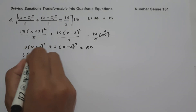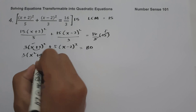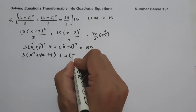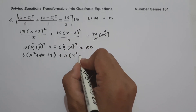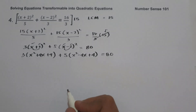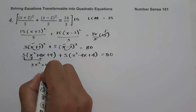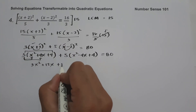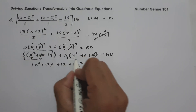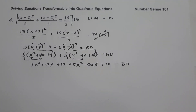Expanding 3(x+2)²: 3 times (x squared plus 4x plus 4) gives 3x squared plus 12x plus 12. Expanding 5(x-2)²: 5 times (x squared minus 4x plus 4) gives 5x squared minus 20x plus 20, equals 80.